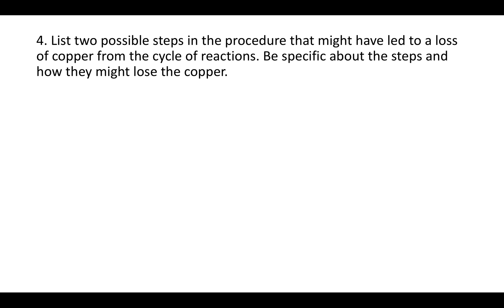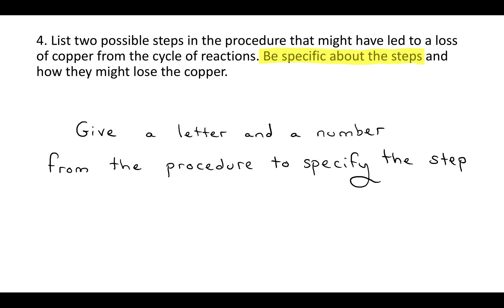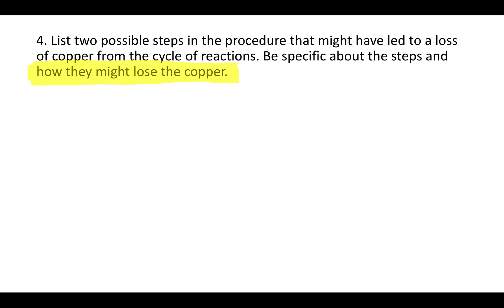Question 4 says: list two possible steps in the procedure that might have led to a loss of copper from the cycle of reactions. Be specific about the steps and how they might lose the copper. Make sure you list two steps, and for each step, give a letter for the section of the procedure and a number for the exact step in that section where you could have lost the copper. Then say how you would have lost the copper in that step.